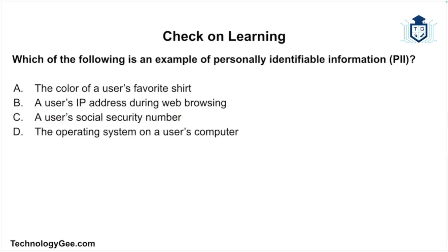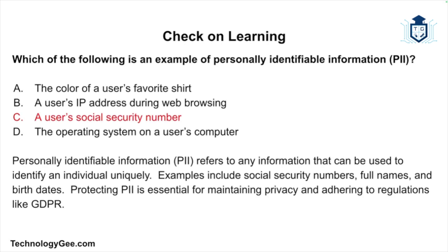Second question: Which of the following is an example of personally identifiable information? Is it the color of a user's favorite shirt? A user's IP address during web browsing? A user's social security number? Or the operating system on a user's computer? The correct answer is a user's social security number. PII refers to any information that can uniquely identify an individual — examples include social security numbers, full names, and birth dates. Protecting PII is essential for maintaining privacy and adhering to regulations like GDPR.